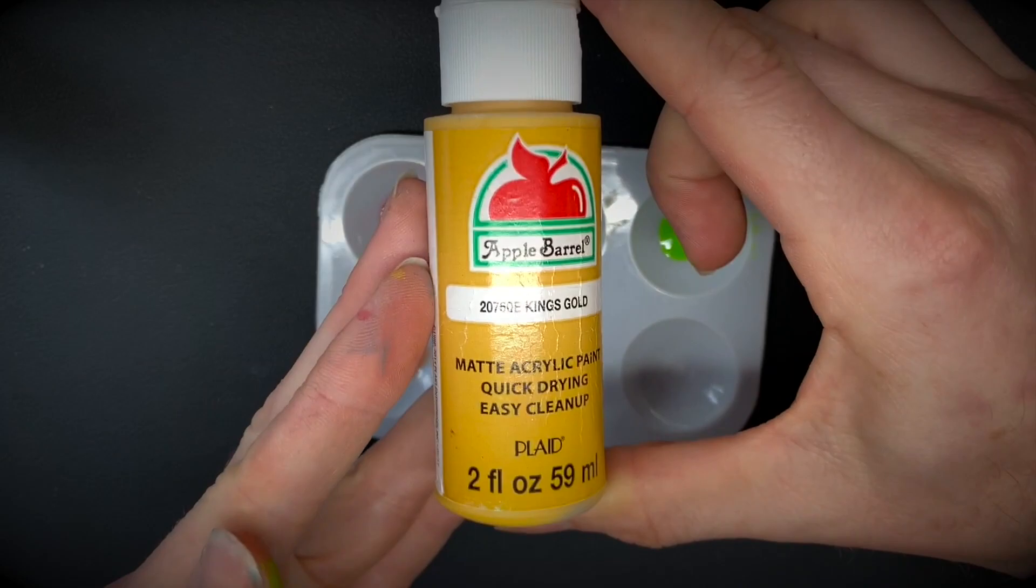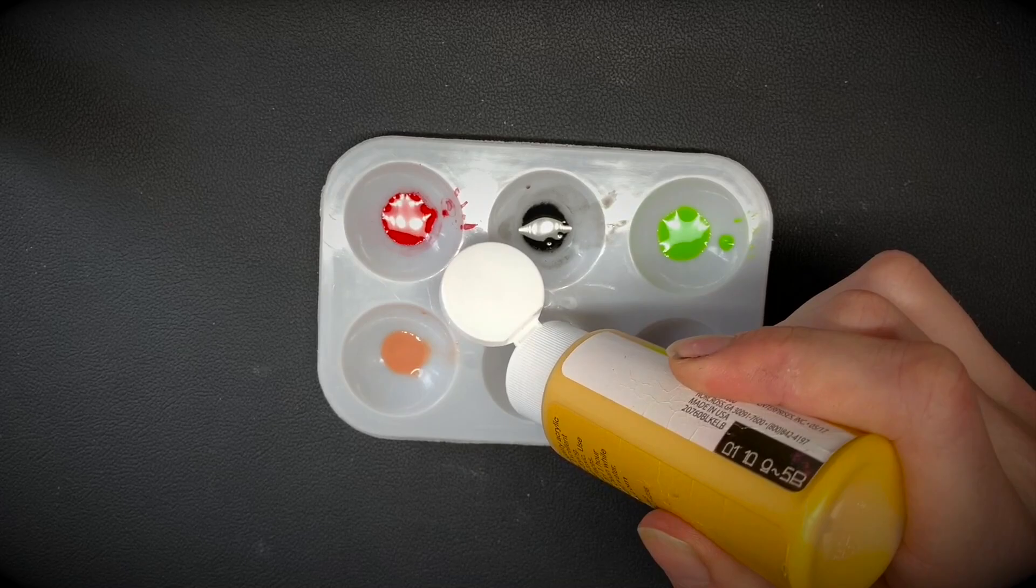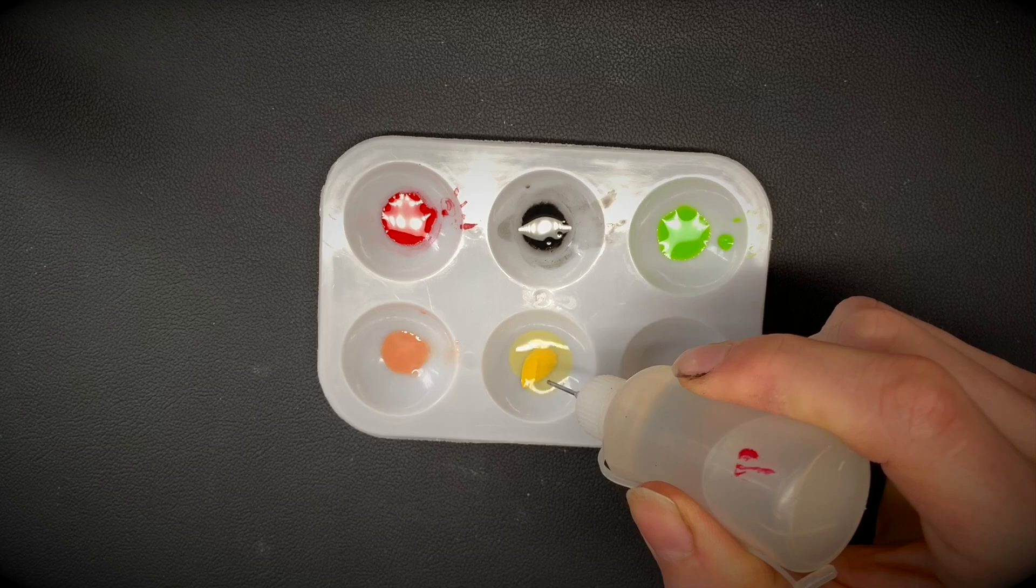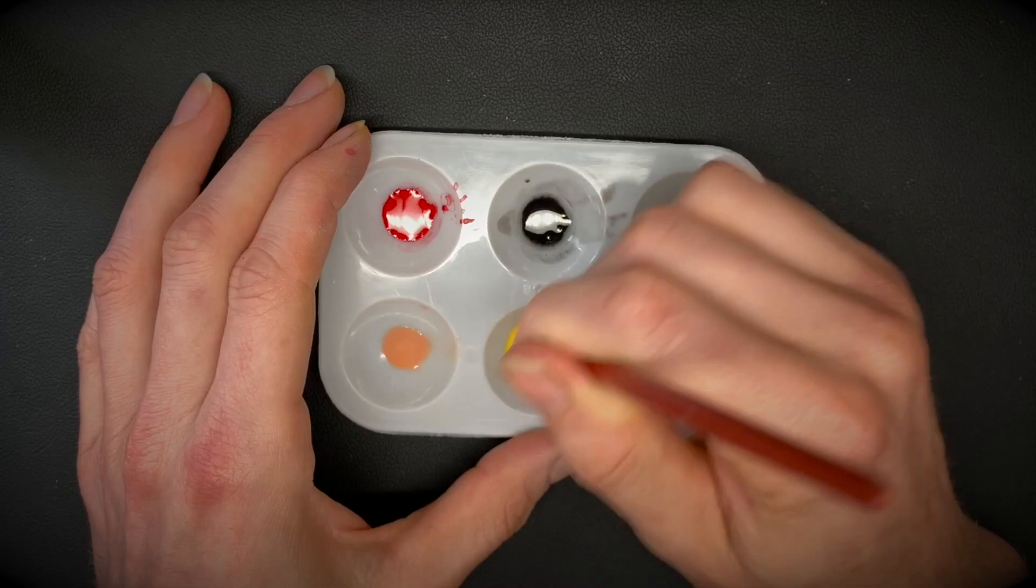And now lastly, some Apple Barrel paints. These are cheap craft paints. For this we're using a yellow. We're going to get a heavy drop in there, and because this paint is heavy pigmented and fairly thick, we went with 15 drops of water. Took a minute to mix up - make sure you mix your craft paints well.